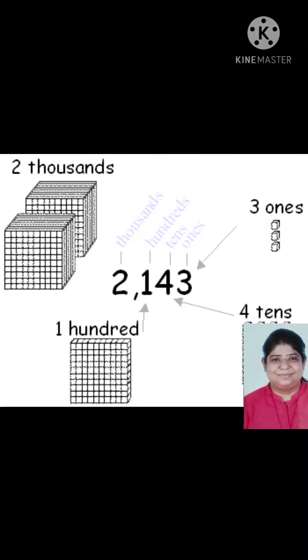We can see 2000 are there, 100 and 4 tens and 3 ones are there. So what will be the answer? 2143.